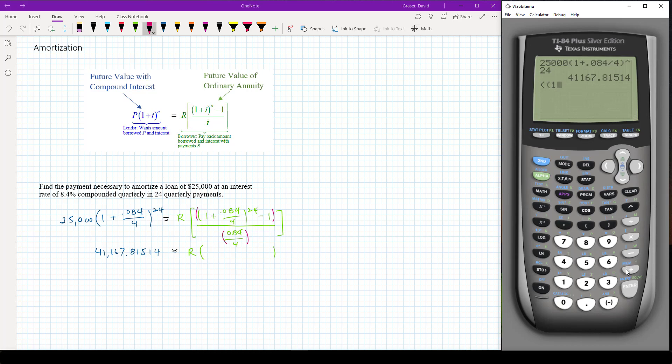(1 + 0.084 divided by 4) raised to the 24th minus 1, another set of parentheses that groups the entire top. Now I'm going to divide by (0.084 divided by 4) so that groups everything on the bottom. Press enter.